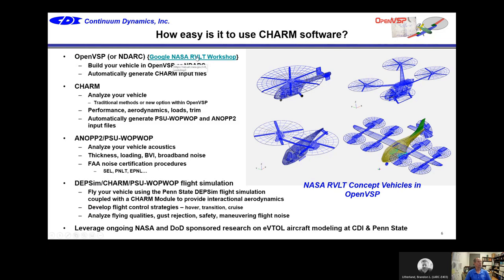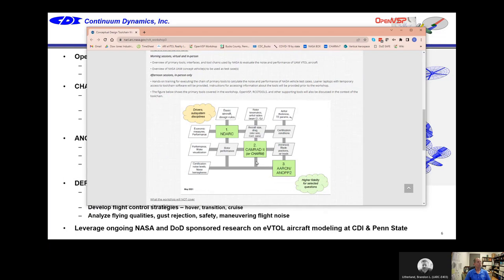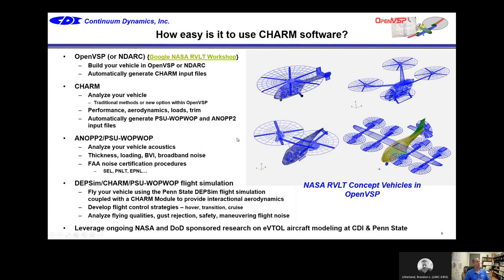You should also look up the NASA RVLT workshop. We've built all of their RVLT — revolutionary vertical lift technology — aircraft in OpenVSP: lift-plus-cruise, quadcopters with collective or RPM control, tilt wings, tilt rotors, and conventional helicopters. At this workshop, August 22nd through 26th, they'll go through how CHARM fits in the software tool chain — you size an aircraft with NDARC, do aeromechanics analysis with CAMRAD or CHARM, feed that information back to NDARC, and eventually go through to ANOPP2 for acoustics prediction.